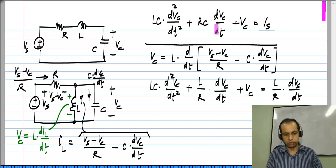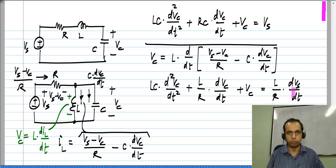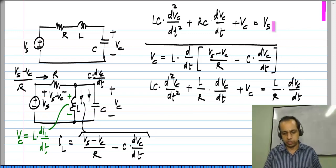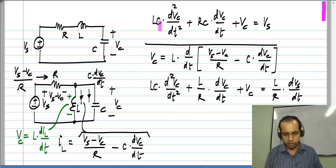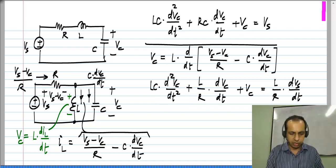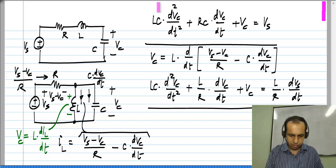If you compare this equation to the first one, the right hand side is different, but that is not of much consequence — it depends on where you apply the input and which variable you consider the output. Even if you consider just the natural response by setting V_s to 0, you see that the first and third terms are the same, but the term in the middle is different.